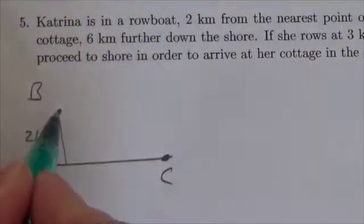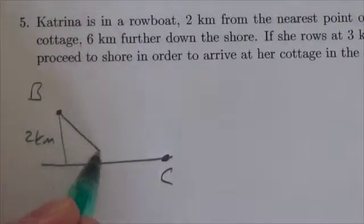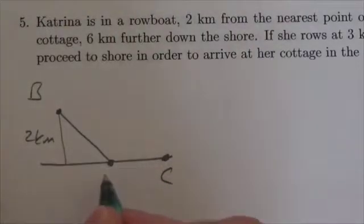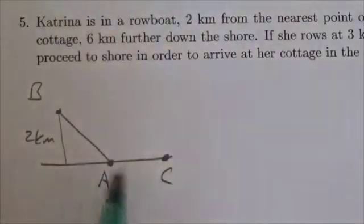Now we're not entirely sure what should be done here, but we're going to assume that she's going to row the boat to hit the shore at some point A and then walk the rest of the distance.